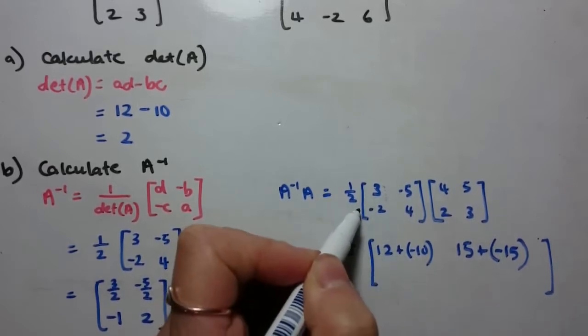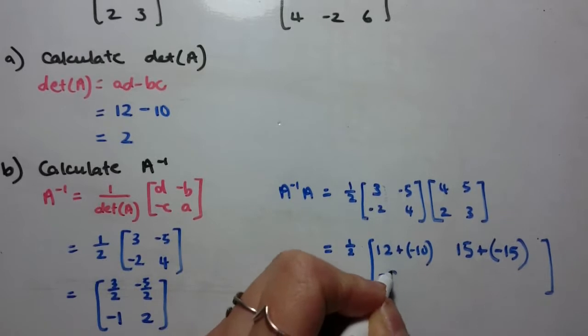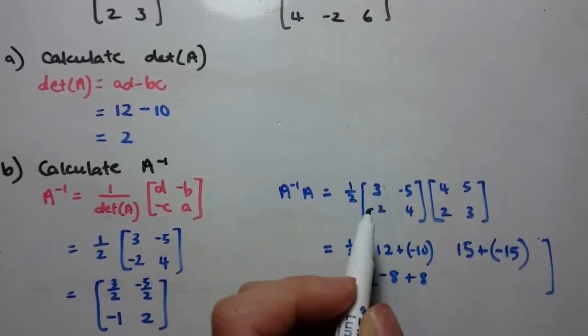Second row first column, so second row first column, negative 2 times 4 is negative 8, 4 times 2, plus 8.